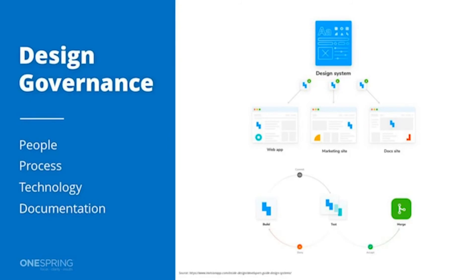Last but not least is governance. I could have a whole webinar just on design governance alone, but ultimately it's about people, various processes, and technology going into creating and managing a design system as a product. A design system is not a project — it's truly a product — and as such it has its own lifecycle. You'll want people and processes to help in both the creation and management of that product as it continues to evolve.